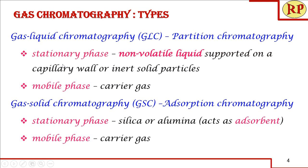We have two types of gas chromatography. First is gas-liquid chromatography, GLC, where the mechanism is partition chromatography — the stationary phase is a non-volatile liquid coated over the capillary wall or inert solid particles, and the mobile phase is the carrier gas. In gas-solid chromatography the mobile phase is again the carrier gas, but the mechanism is adsorption chromatography because the stationary phase is a solid such as silica or alumina which acts as the adsorbent.